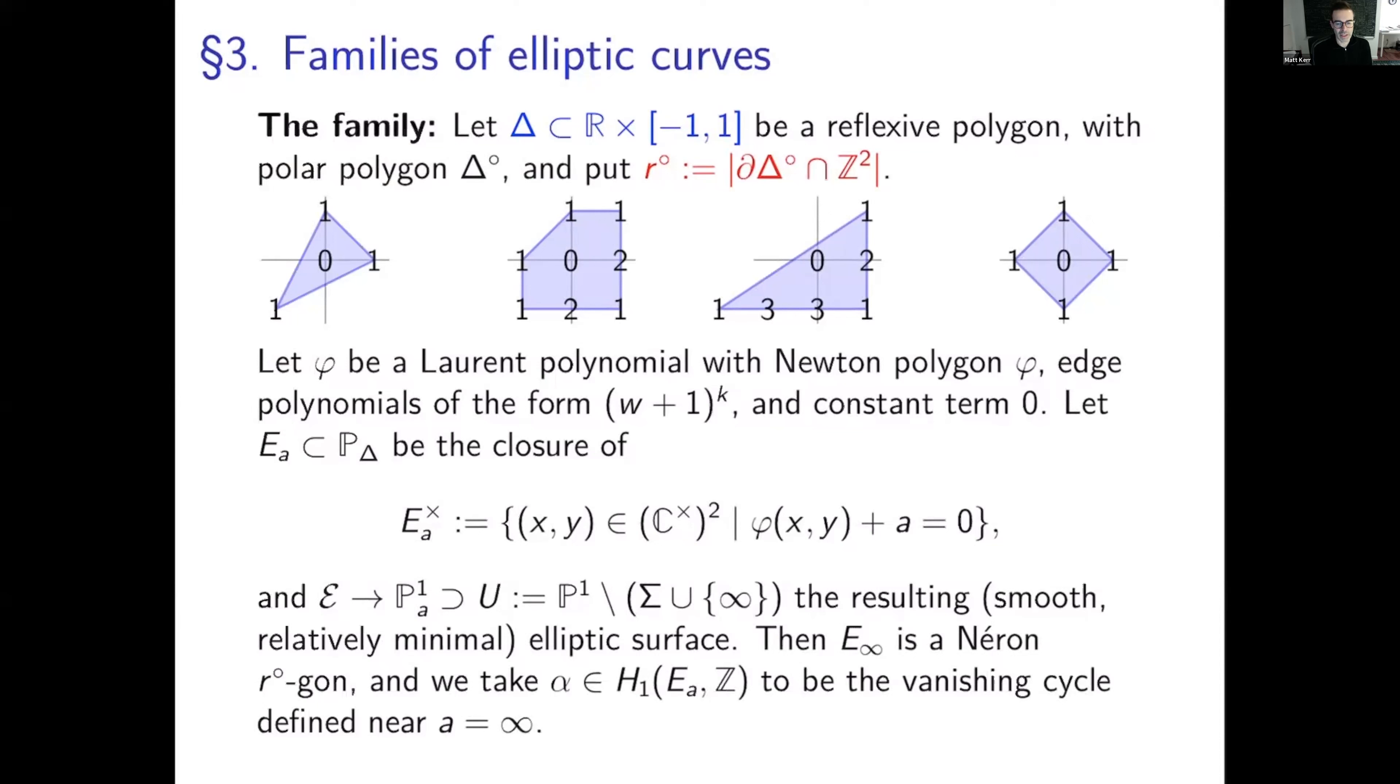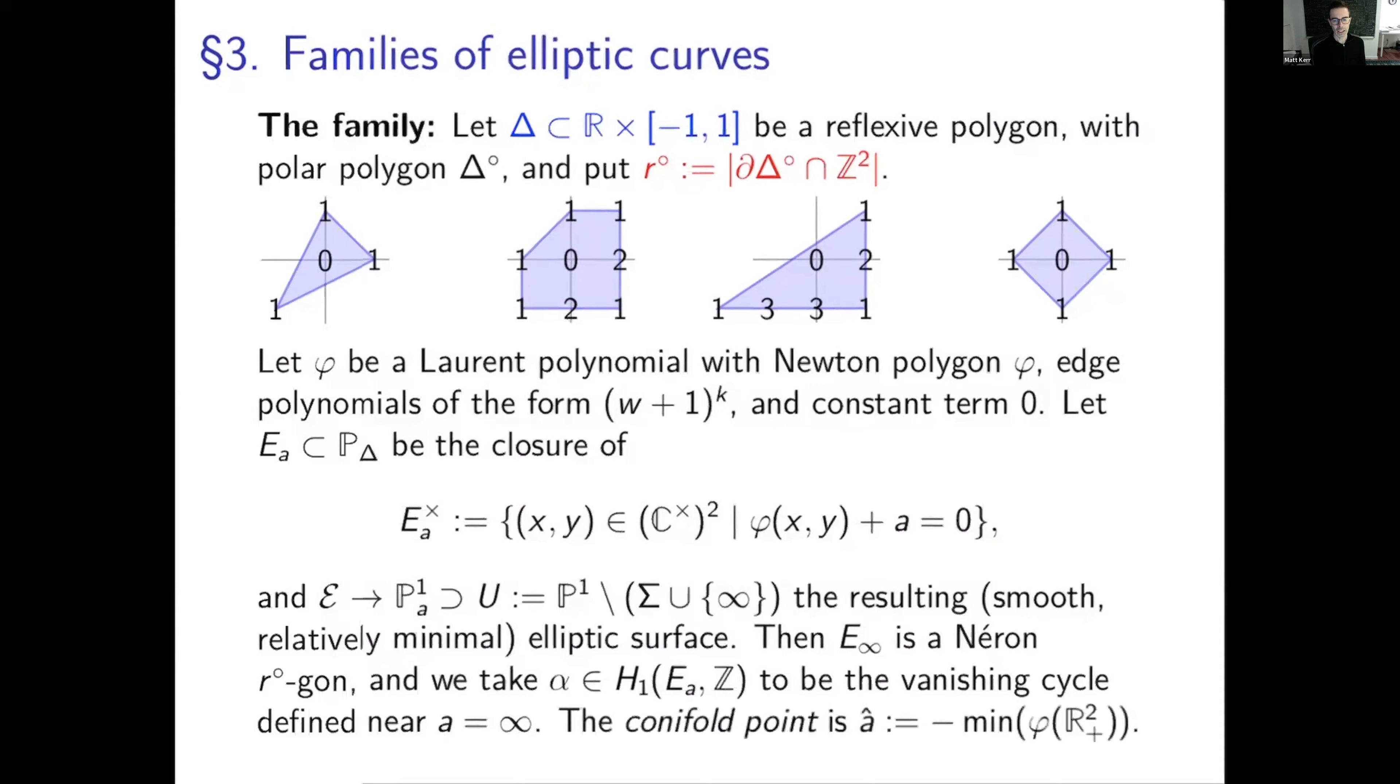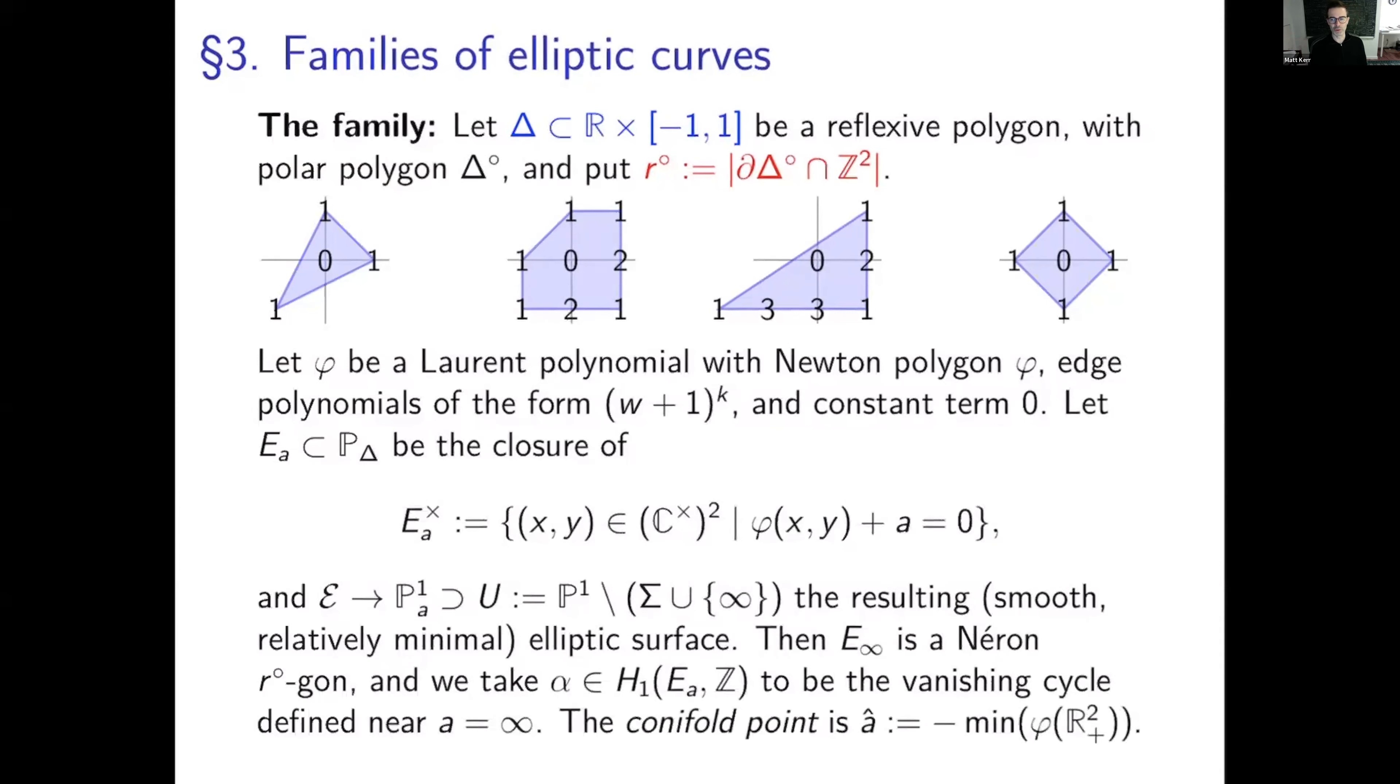So E infinity is the Neron r circle gone that I mentioned before. And we take alpha in H1 to be the vanishing cycle defined near a equals infinity. So it's the vanishing cycle as you approach the Neron minimal model. I also need something called the conifold point, which I'll just mention only twice in this talk, a hat, which is going to be minus the minimum value of phi on pairs of positive real numbers.